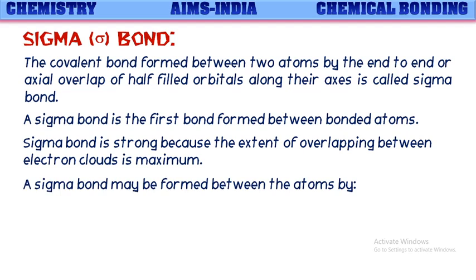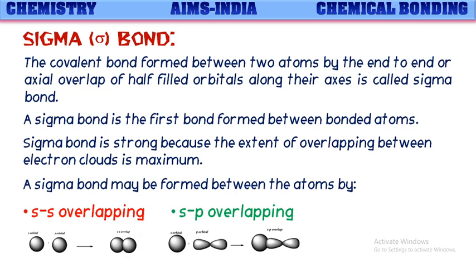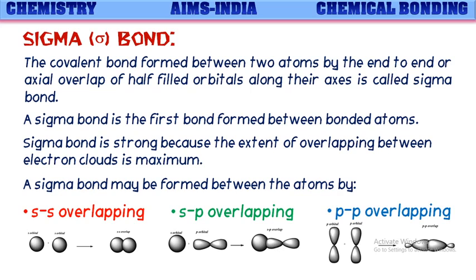A sigma bond may be formed between atoms by ss overlapping — where the s orbital of one atom overlaps with the s orbital of another atom. It may also be formed by sp overlapping, where the s orbital of one atom overlaps with the p orbital of another atom. Additionally, sigma bonds can be formed by pp overlapping, where the p orbital of one atom overlaps with the p orbital of another atom.